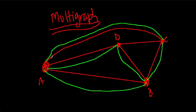So to identify a multigraph, look at the vertices. Is there more than one edge connecting any two vertices? If the answer is yes, then what you have is a multigraph. All right. Hope that helps.